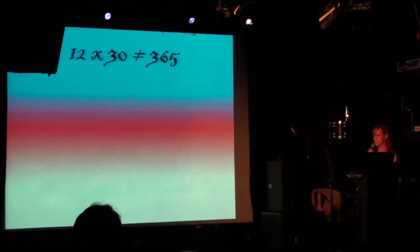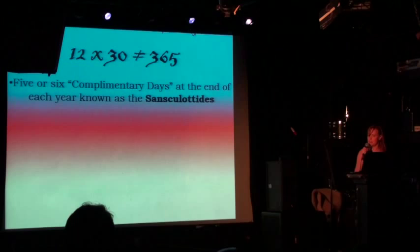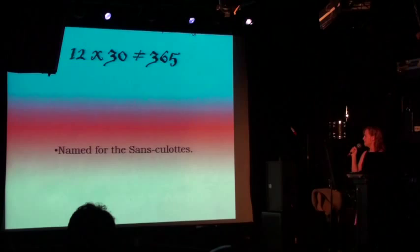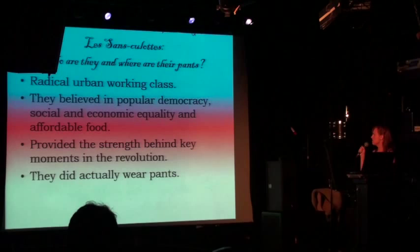Here's some other issues: 12 times 30 does not equal 365. So what did they do with those extra five or six days — or six in a leap year? These were called complementary days, and they were an intercalary period — so they weren't even really supposed to be part of the year. And they named them for the sans-culottes, or they named them the sans-culottes. These are five or six complementary days at the end of each year. And everybody got those days off, so that was a bonus.